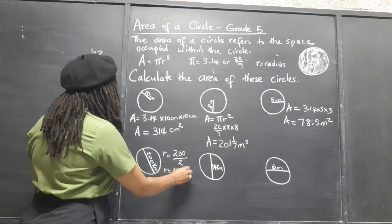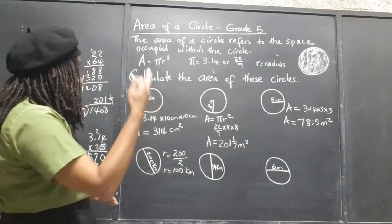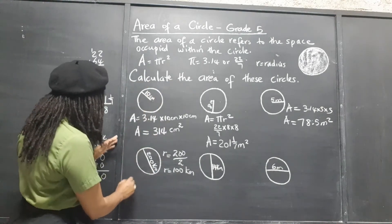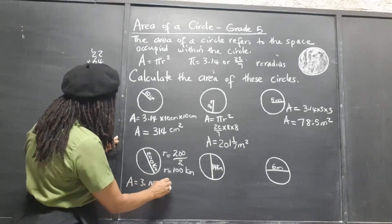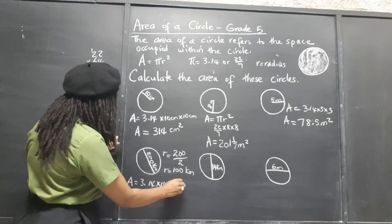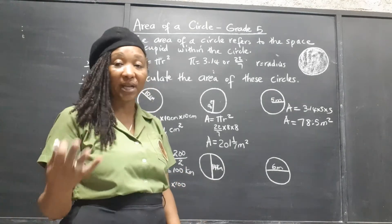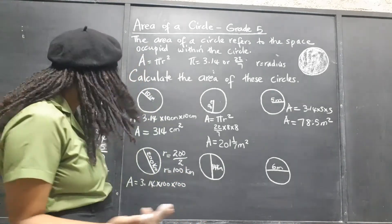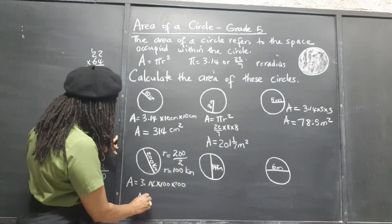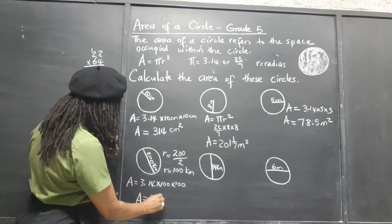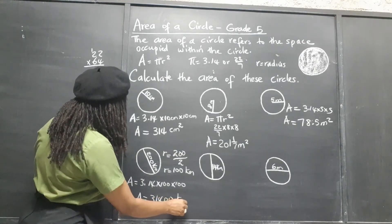Since it's a power of 10, I'm going to use my decimal: 3.14 times the radius times the radius. We're multiplying by 100 times 100, so that's 4 decimal places we're going to end up moving — 1, 2, and we add 2 more zeros. So the answer is 31,400 kilometers squared.